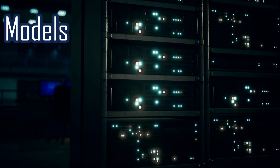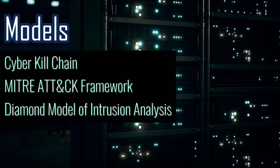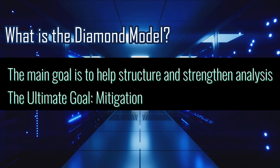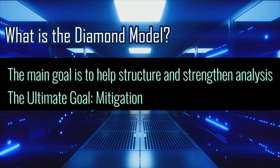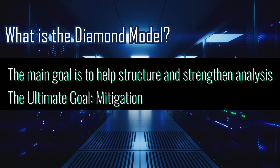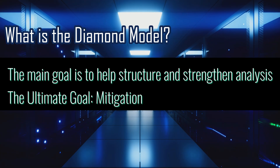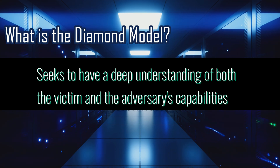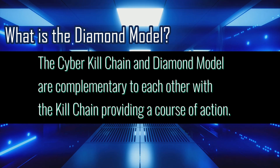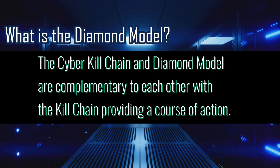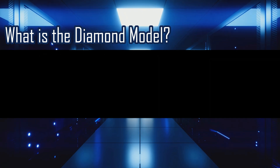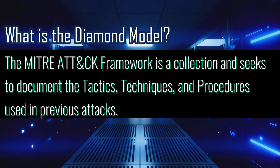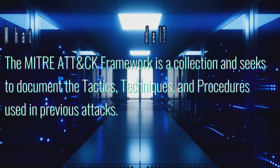Let's talk about models. There are three main models: the Cyber Kill Chain, the MITRE ATT&CK Framework, and the Diamond Model of Intrusion Analysis. The Diamond Model's main fundamental goal is to help structure and strengthen analysis and achieve the ultimate goal of mitigation. This model isn't really a strategy, but it's more of a way to support decision making in order to make better decisions and observe the big picture with information that has been discovered. Overall, it seeks to have a deep understanding of the infrastructure and capabilities of the victim and the adversary. The Cyber Kill Chain Framework and Diamond Model work well together and are highly complementary. While the Diamond Model provides ways to organize information, the Kill Chain provides a course of action. The MITRE ATT&CK Framework is also complementary to the Diamond Model, as MITRE is a giant collection of adversary groups and seeks to understand and document the tactics, techniques, and procedures used in previous attacks.